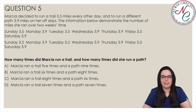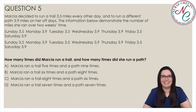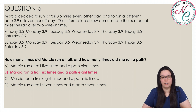How many times did Marcia run a trail and how many times did she run a path? The correct answer is B: Marcia ran a trail 6 times and a path 8 times. The information demonstrates that Marcia ran 3.5 miles 6 times — the trail is 3.5 miles long, so she ran a trail 6 times. She ran 3.9 miles 8 times, so she ran the path 8 times.